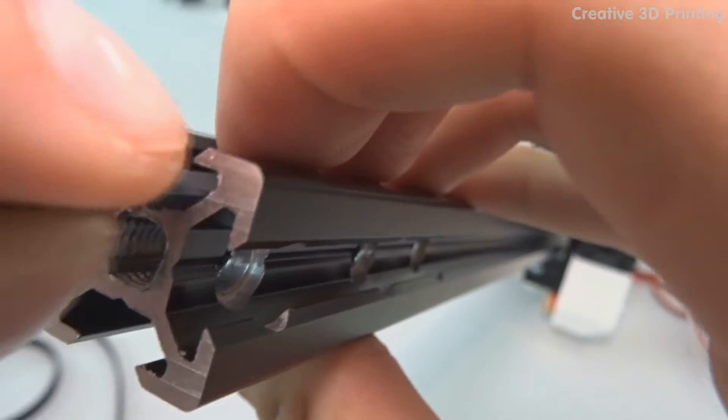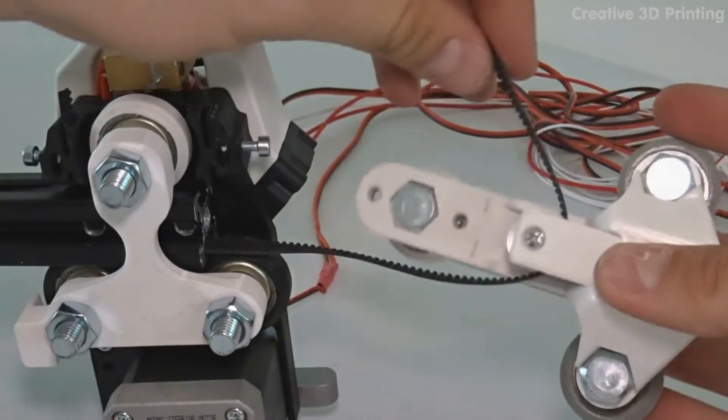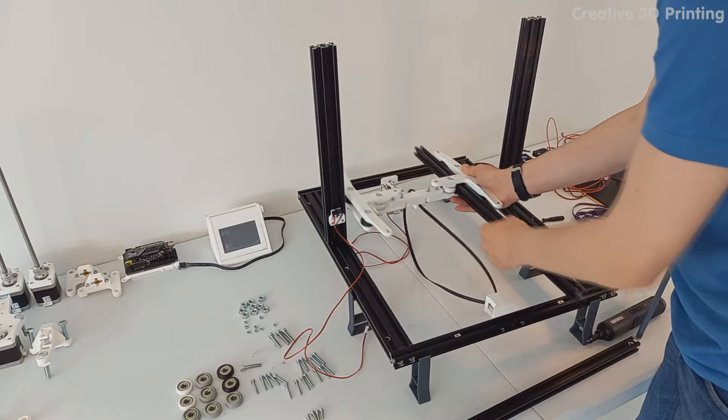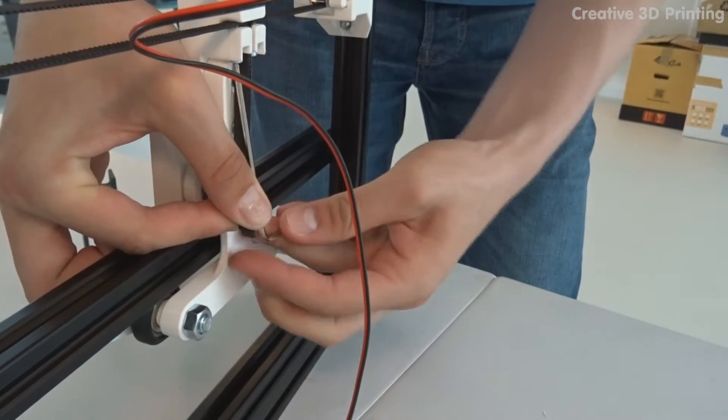I mount the carriage for the X axis on the X aluminum profile and tighten the timing belt. Now I mount the Y carriage on the Y aluminum profile and attach and tighten the GT2 belt.